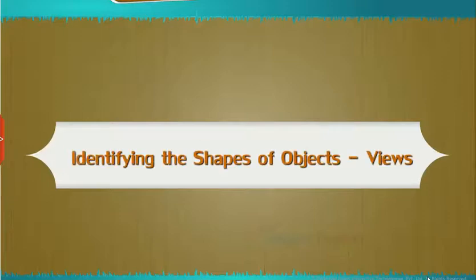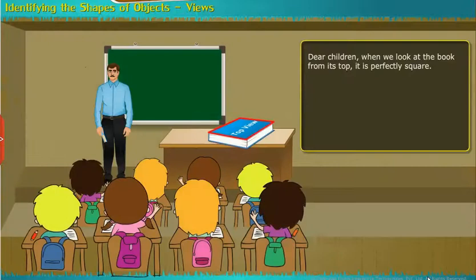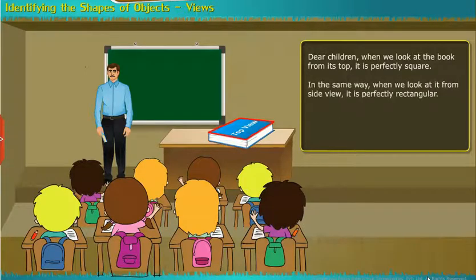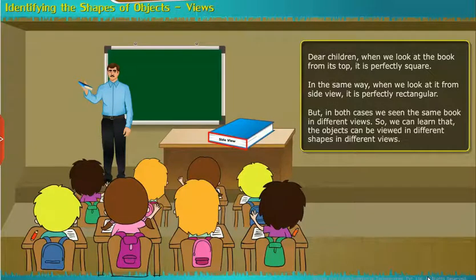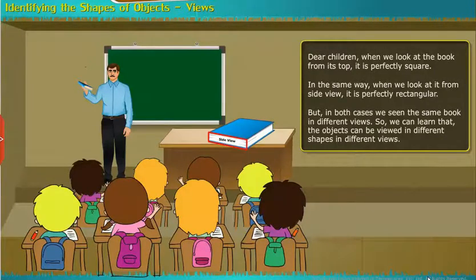Let us study how to identify the shapes of objects in different views. When we look at the book from its top, it is perfectly square. In the same way, when we look at it from the side view, it is perfectly rectangular. But in both cases, we see the same book in different views. So we can learn that objects can be viewed in different shapes from different views.